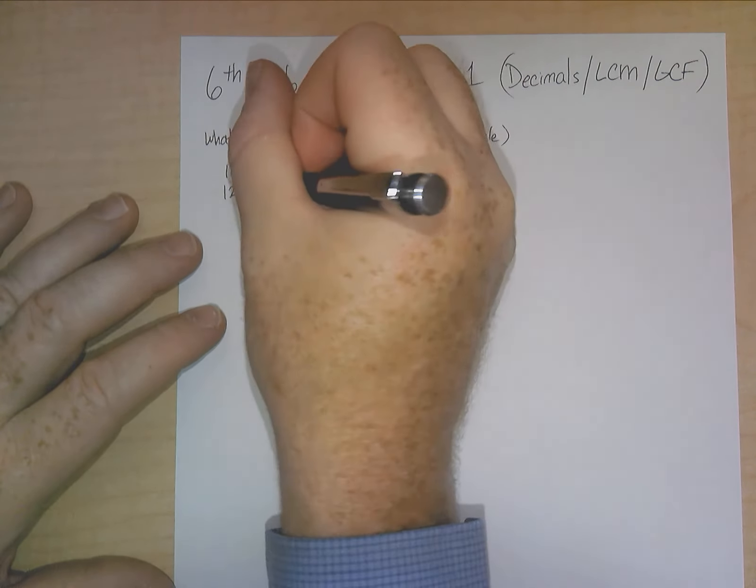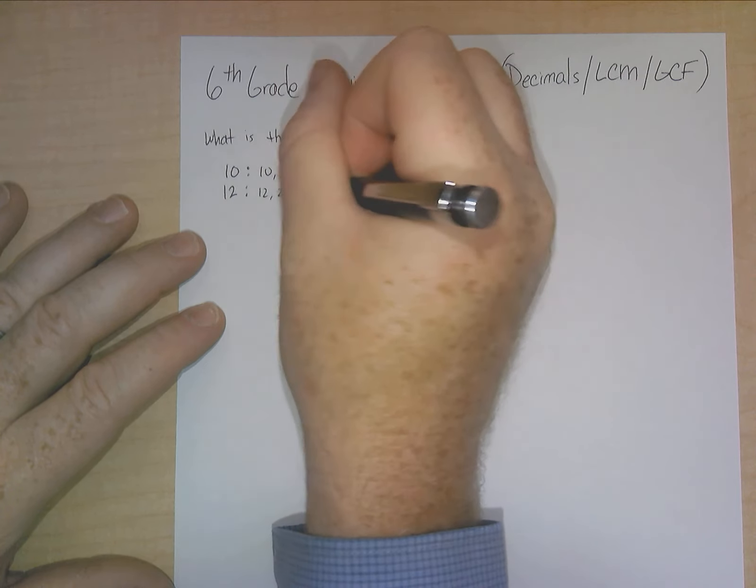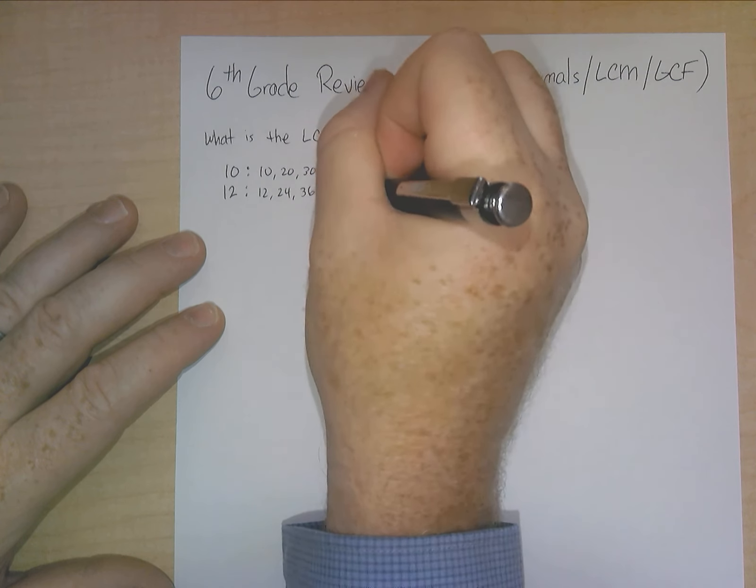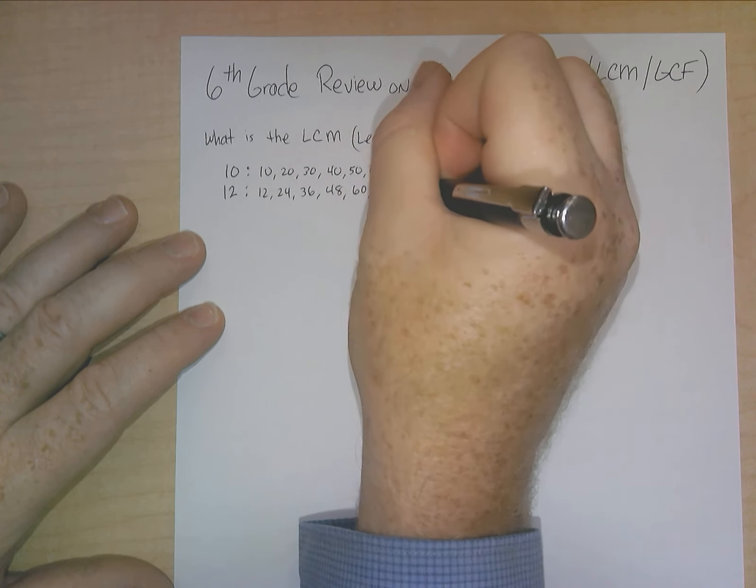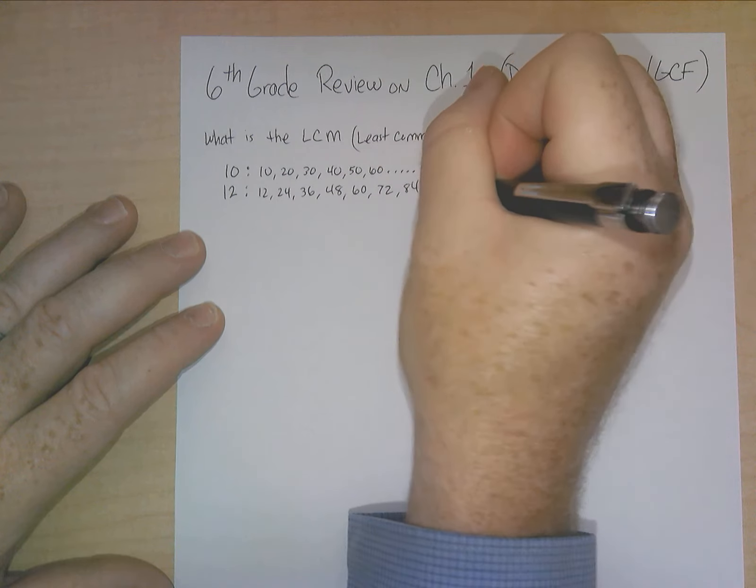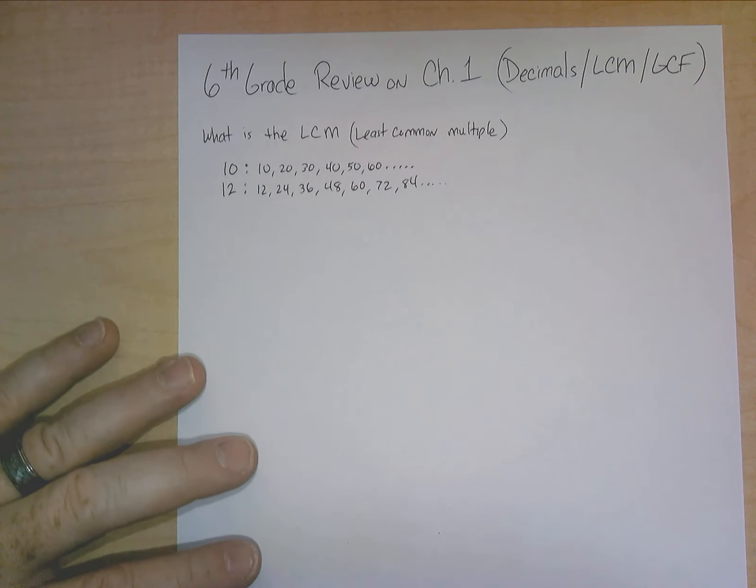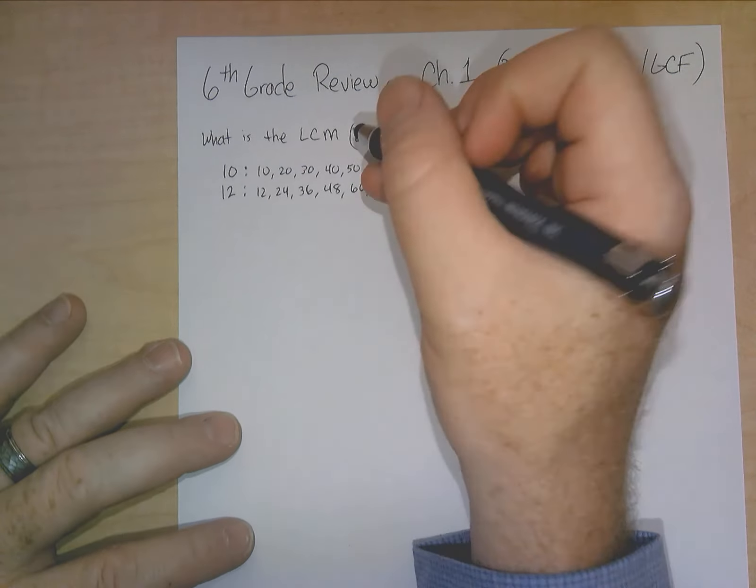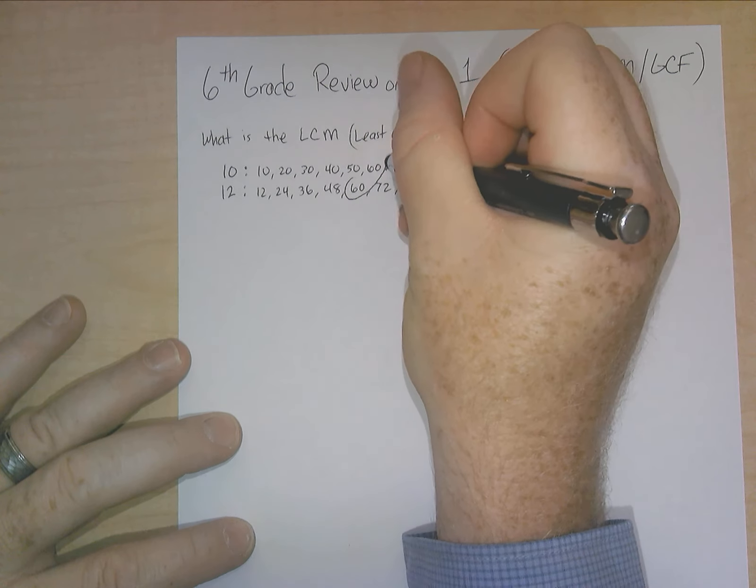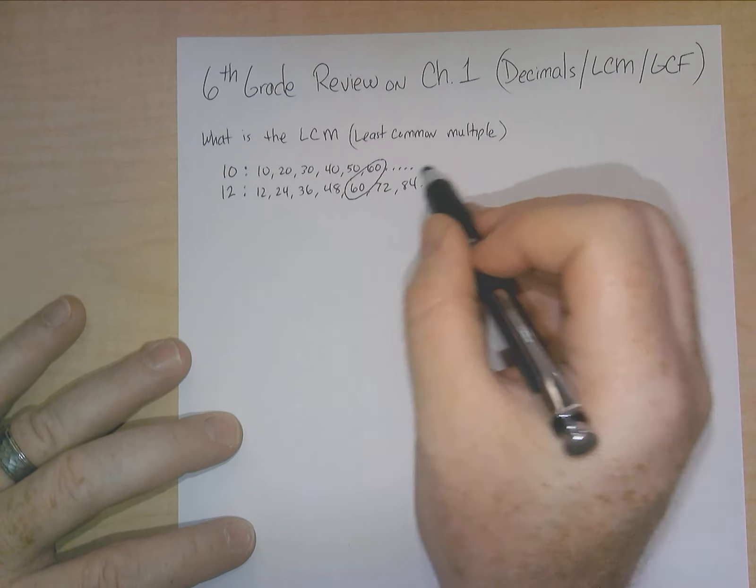For 12, same thing. 12, 24, 36, 48, 60, 72, 84, and so on. And the goal is to stop until you get to your first common multiple that you have in common. And this is the least one. This is the smallest one. There are going to be more down the road.